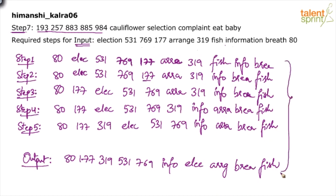This method is a little time-consuming, but the advantage is that when you've written all the steps properly, answering the questions becomes very easy. The questions may ask things like: how many words and numbers are between 177 and info in step five? With the complete step written out, you can simply count: one, two, three, four — the answer is four. It takes no time to find the answer using this method.